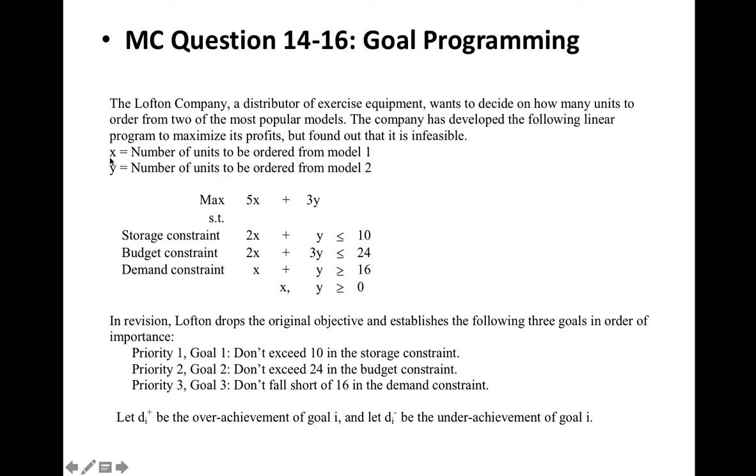In the program, X is the number of units to be ordered from the first model. Y is the number of units to be ordered from the second model. The profit is expressed as 5X plus 3Y, and they have three constraints: storage constraint, budget constraint, demand constraint.